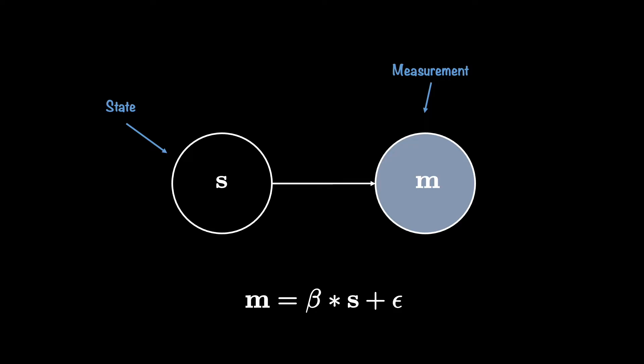If we have a good state estimation, then maybe we can work around the steps where our measurement goes missing, as we know that measurement was a consequence of the state. In Bayesian statistics, this type of formulation of finding unobserved variables using observed variables is called a latent variable model, where the goal is to first estimate S, the latent variable, and then include it as part of the full parameter estimation.